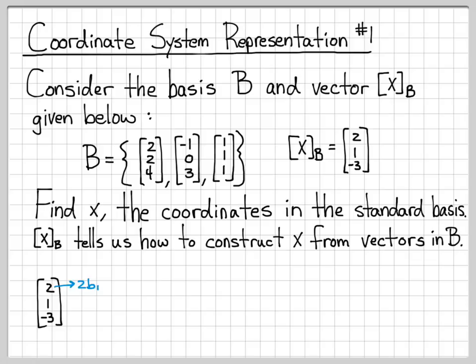So let's take a look at this. Let me go ahead and write down x sub B, and let's think about what each of these entries means. 2 tells us to move, like I said, 2 units in the b1 direction. So this vector right here is a vector in the standard basis, 2, 2, 4, obviously.